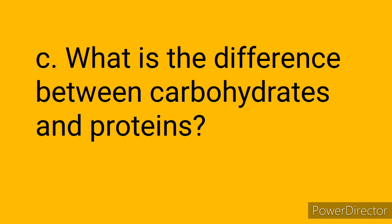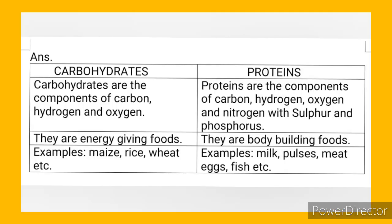See what is the difference between carbohydrates and proteins. For this you divide the page into two parts and draw a tabular form. Carbohydrates vs Proteins. First point: carbohydrates are the components of carbon, hydrogen and oxygen. Under proteins, first point: proteins are the components of carbon, hydrogen, oxygen and nitrogen with sulfur and phosphorus.